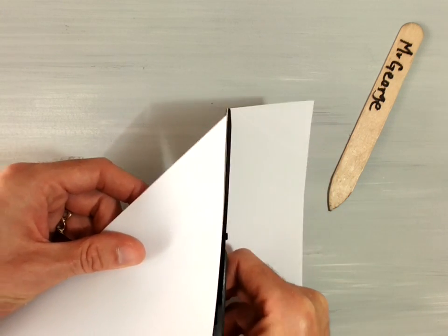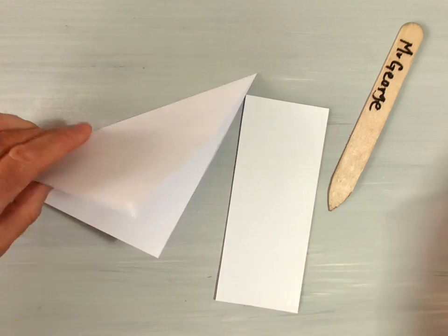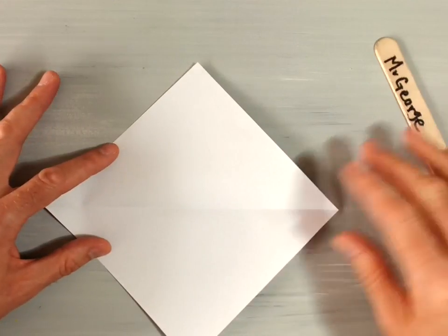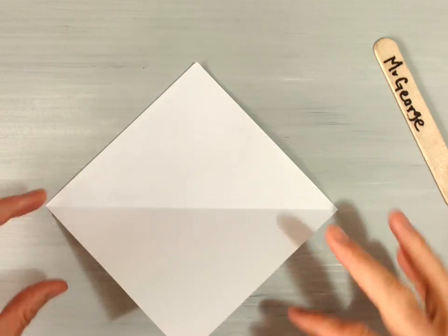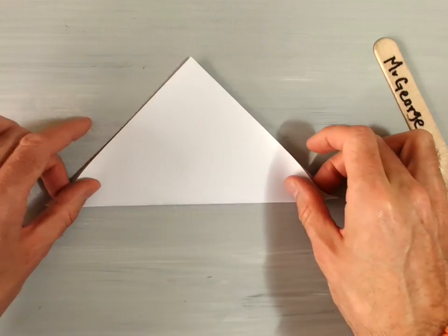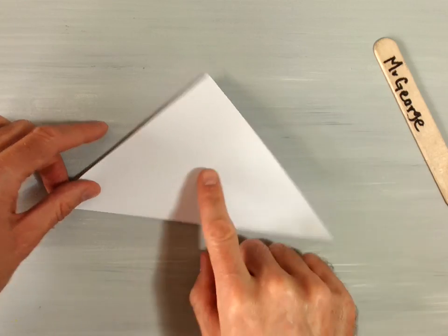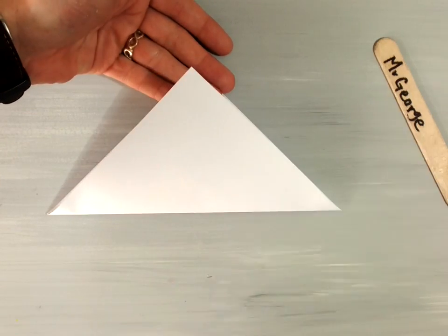And you can use it for something else if you'd like, or you can recycle it. And now you'll see that we have our first fraction. After you've got this fraction, fold your paper so that the crease is pointing towards you and the open part is facing away from you.